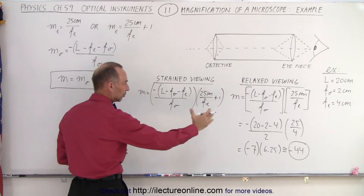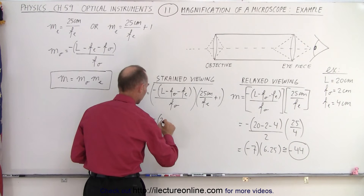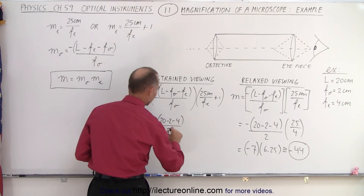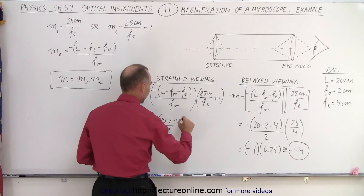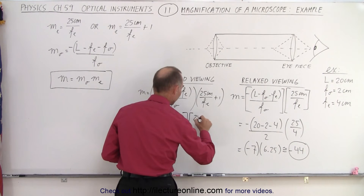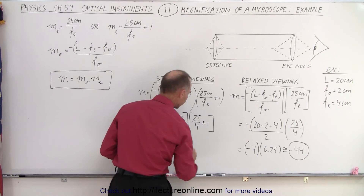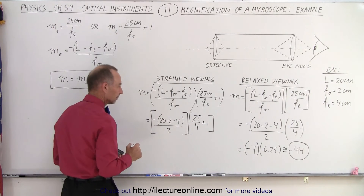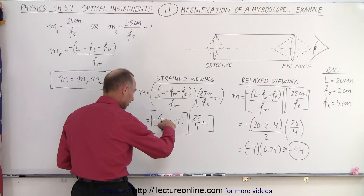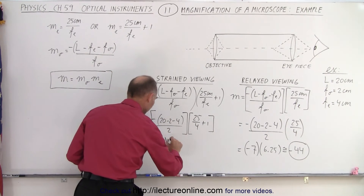Everything else will be the same. This equals minus 20 minus 2 minus 4, divided by 2, then multiplied times 25 divided by 4, plus 1. This part is the same as before: 14 divided by 2 is minus 7.